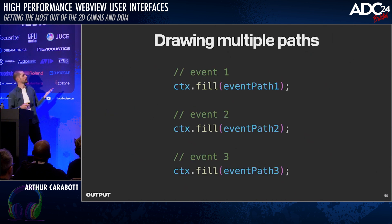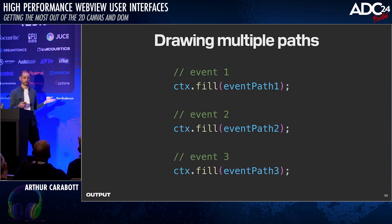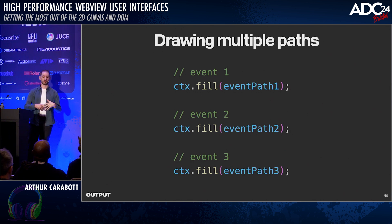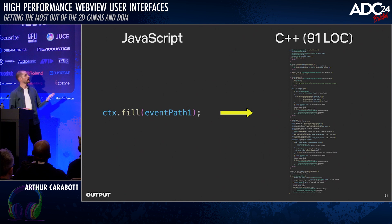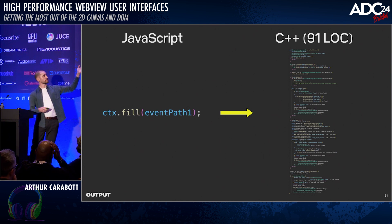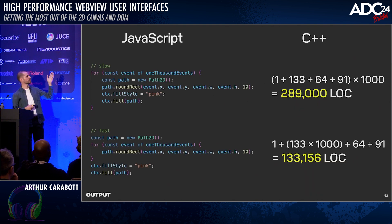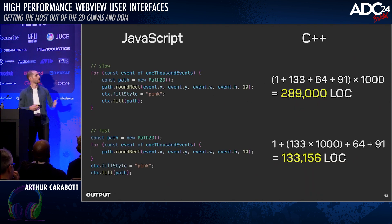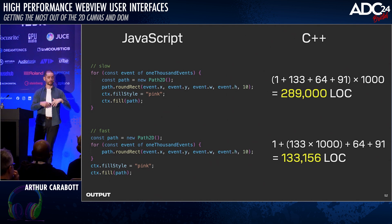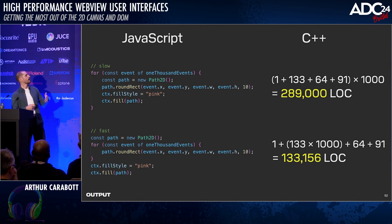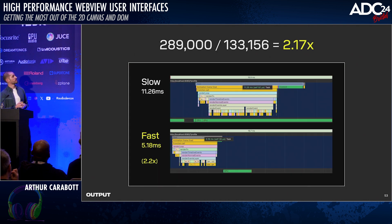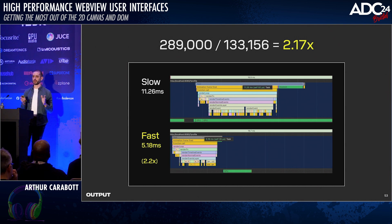Another example: in the slow version, we call fill multiple times — once for each event — just to draw the background. In the fast approach, we call fill once for all the backgrounds. That fill method is a 91-line C++ method. Doing quick math for 1,000 events: the slow version has potentially 289,000 lines of C++ being evaluated, versus 133 in the faster version. Working out the ratio between those gives 2.17 — and if you remember the performance speedup we saw before, this turns out to be a fairly useful heuristic.